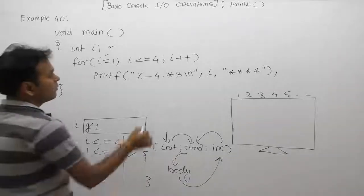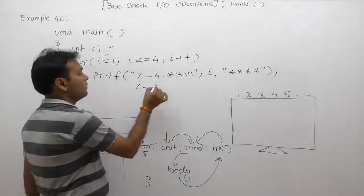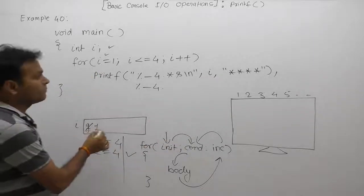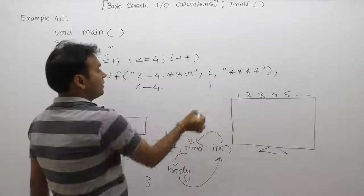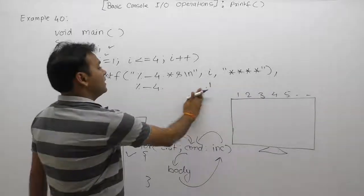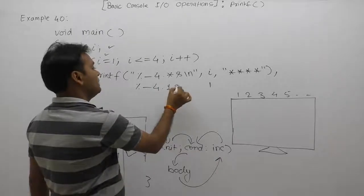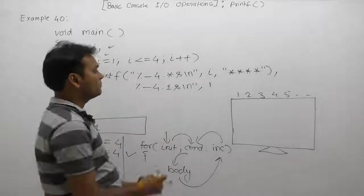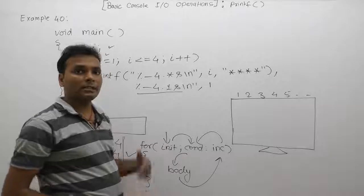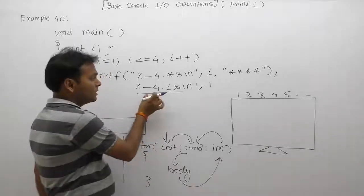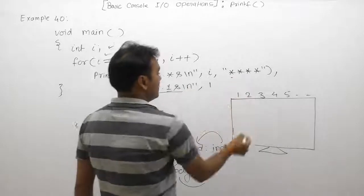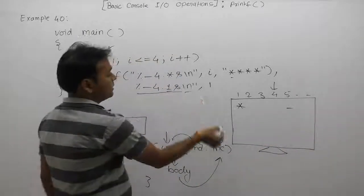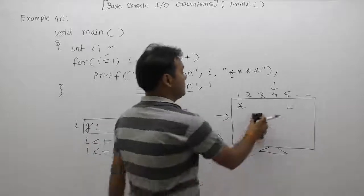The condition is true when i equals one — one is less than or equal to four, so the body executes. The first time, minus four is replaced by the value of i, which is one. So the format becomes minus four point one s. According to that, four bits are used and the star character is displayed within four bits — it will appear on the fifth position, but according to slash n it shifts to the beginning of the next line.